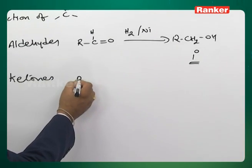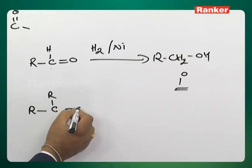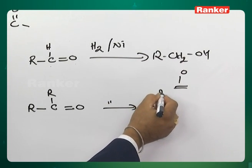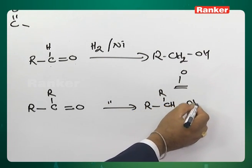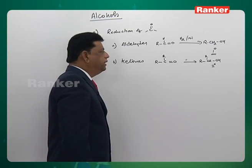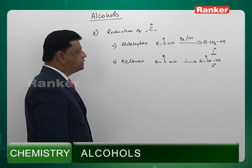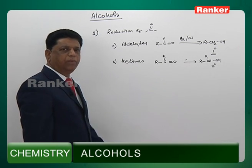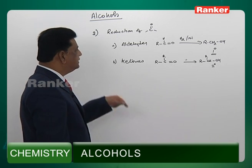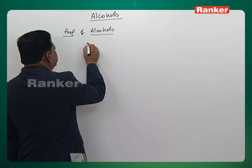All aldehydes on reduction give primary alcohols. Similarly, ketones with the same reagent will give secondary alcohols. In this method we have a drawback: tertiary alcohols cannot be prepared using this type of reduction of a carbonyl compound. No carbonyl compound will give a tertiary alcohol under these circumstances.